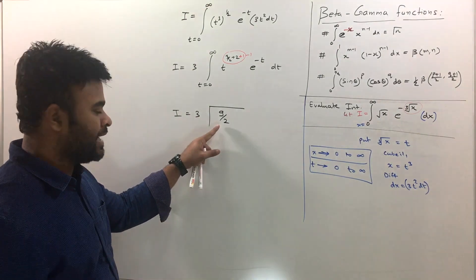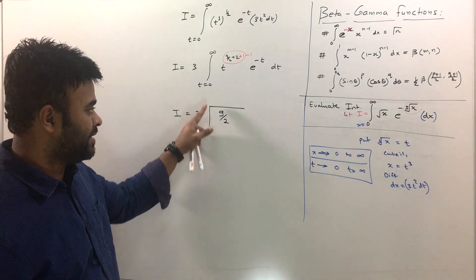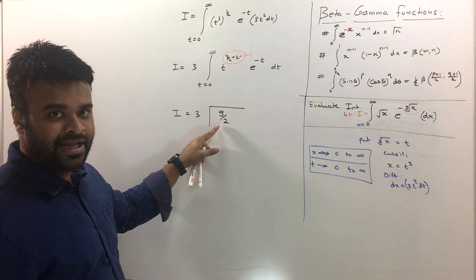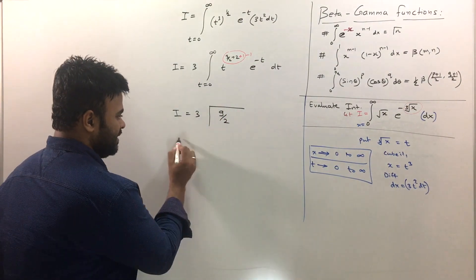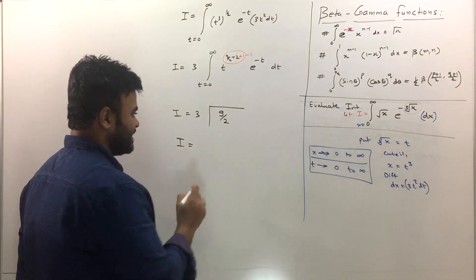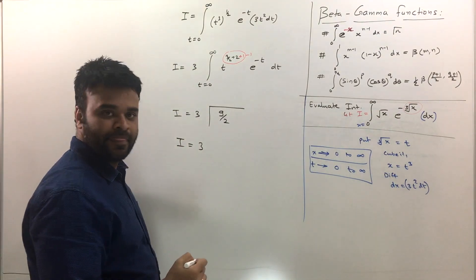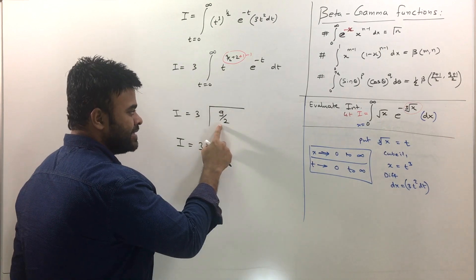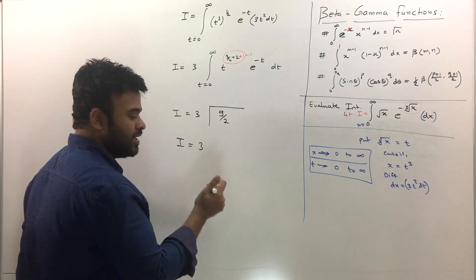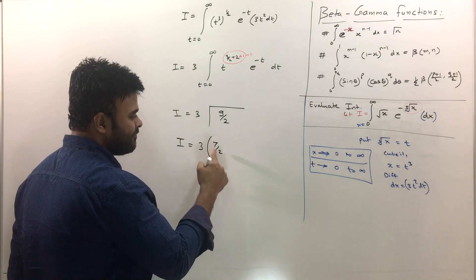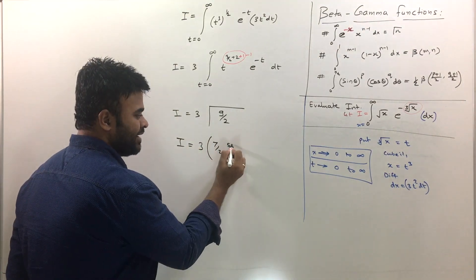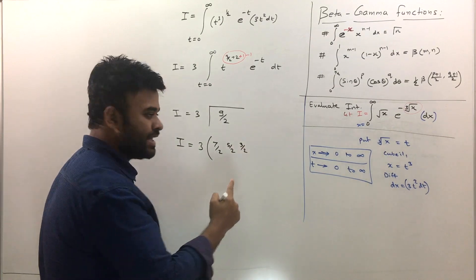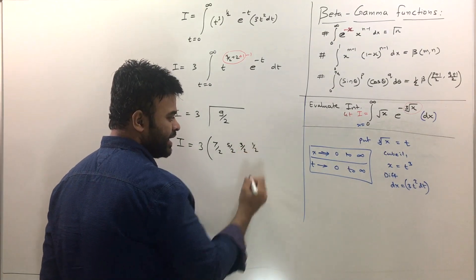Now once I get this as gamma 9 by 2, 9 by 2 is a value under gamma sign. And this is a fraction. And how do we solve gamma of fraction? Just keep 3 as it is. Now this 9 by 2 subtract 1. Let me explain that procedure. This from 9 by 2 subtract 1, you get 7 by 2. Then from 7 by 2 subtract 1 again, you get 5 by 2. Keep doing that. 5 by 2 minus 1, 3 by 2. Keep doing that. 3 by 2 minus 1 is 1 by 2.